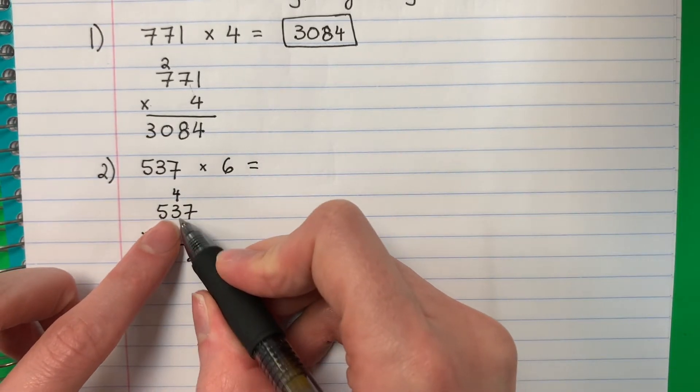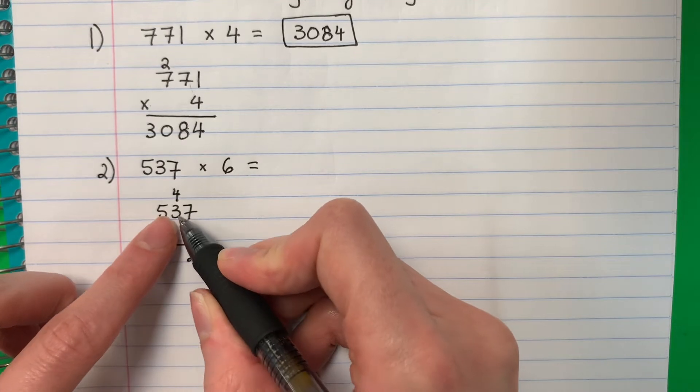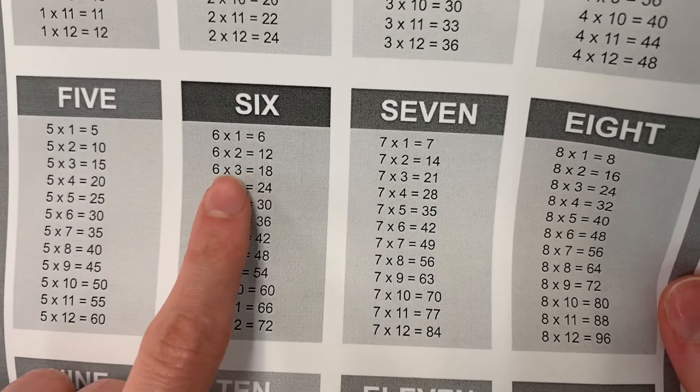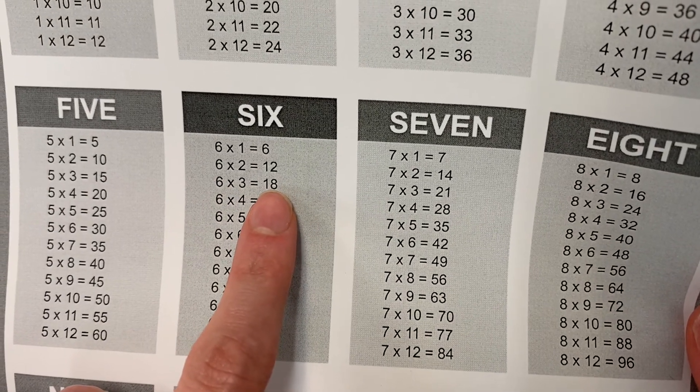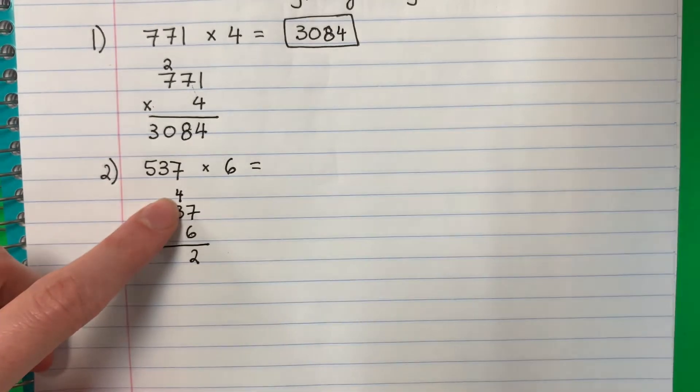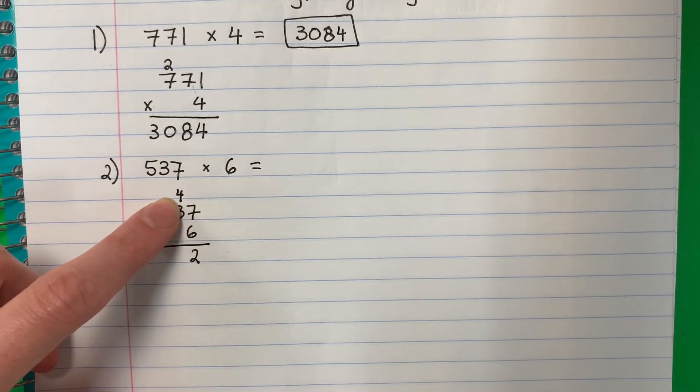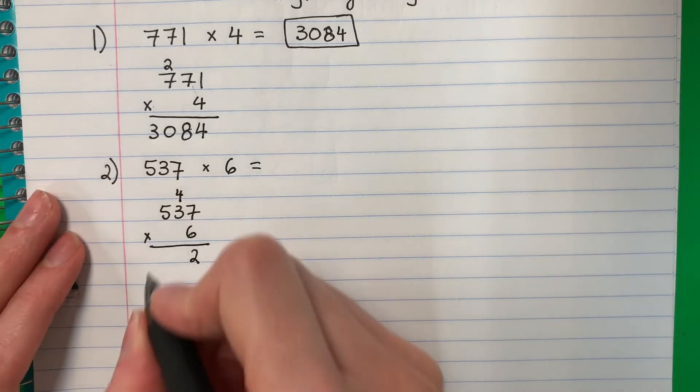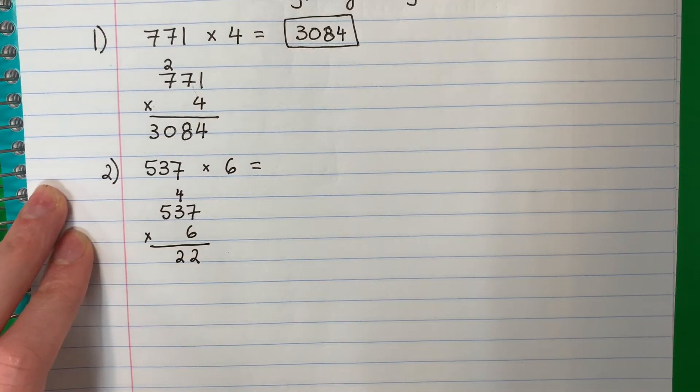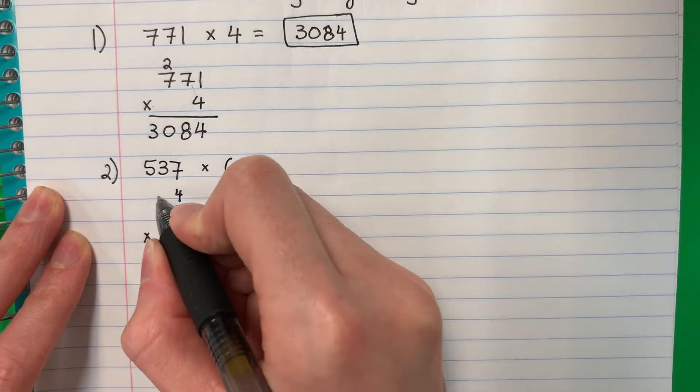Okay, now again, otra vez. Six times three. Seis por tres. Six times three. Let's take a look. Six times three. Eighteen. Dieciocho. Eighteen. But I have a four. Pero tengo cuatro. So 18 plus four. Dieciocho más cuatro. Eighteen plus four is 22. Okay, dieciocho más cuatro es veintidós. So you put the two here and the two here.